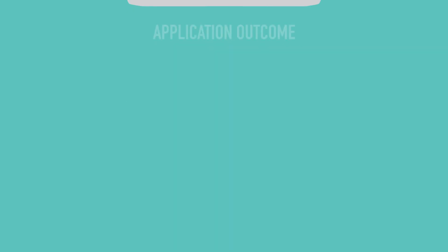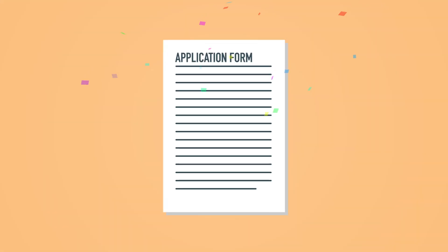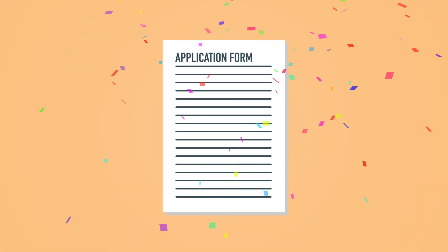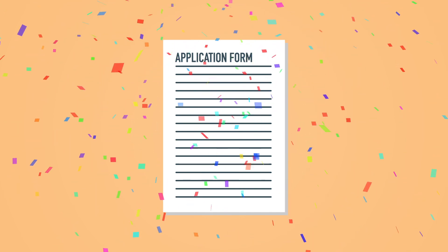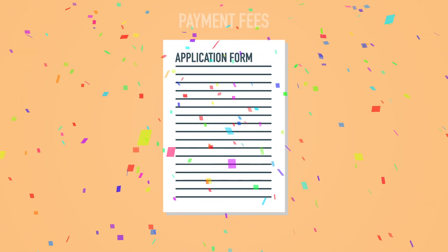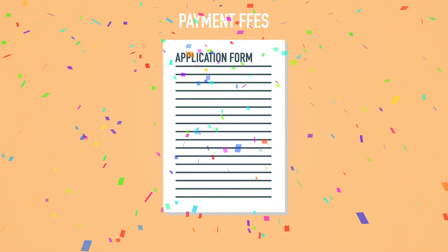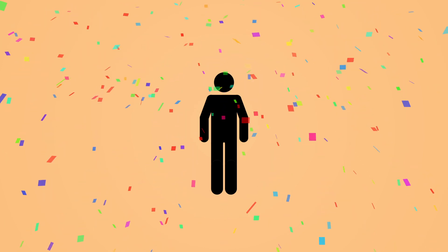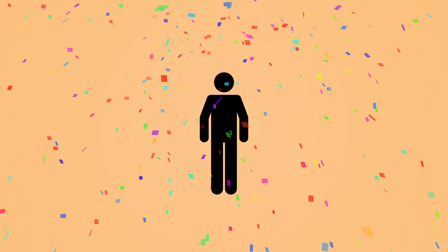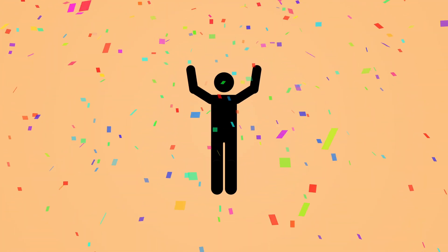Over the next few days, our admissions team will review your application and let you know the success of your application. If your application is successful, you will need to pay your acceptance fee and settle your payment plan for the year. Once that step is completed, you are a fully registered student.